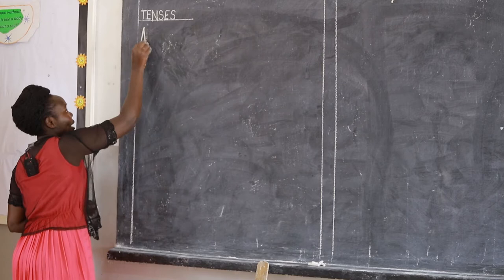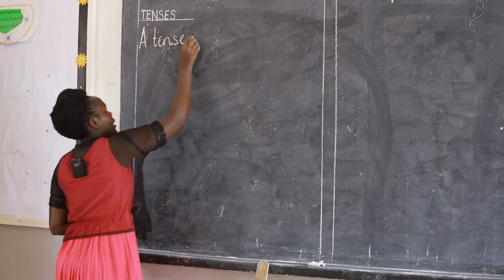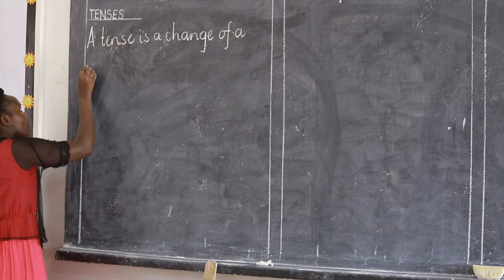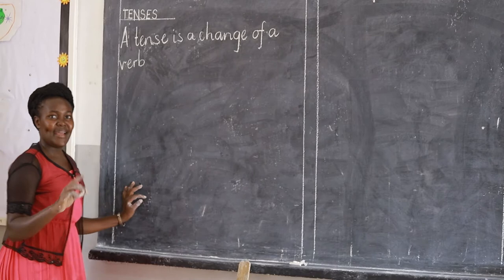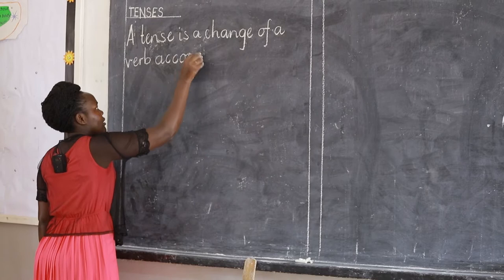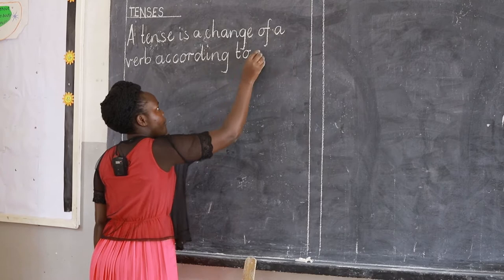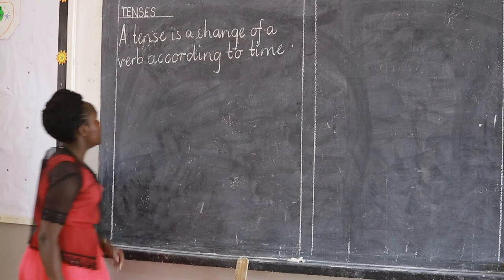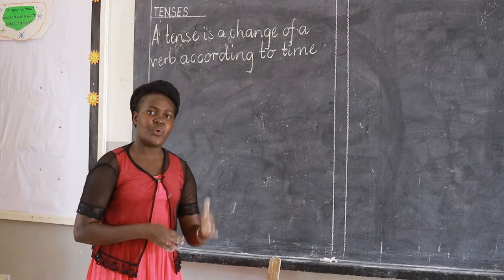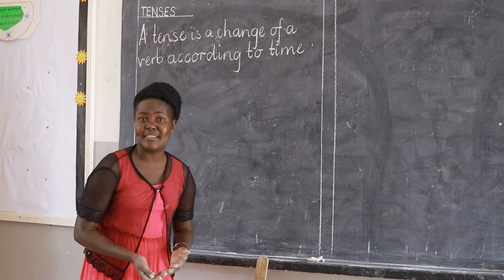So, a tense — this is what it is. A tense is a change. A tense is a change of a verb. Remember, a verb is an action word, a doing word. So, a tense is a change of that action word, that doing word, according to time. What is a tense, everybody? A tense is a change of a verb according to time. So, these action words, the doing words, change according to time.